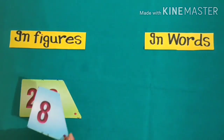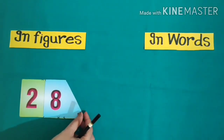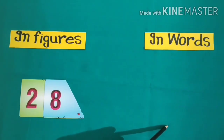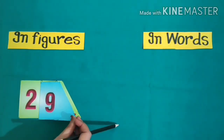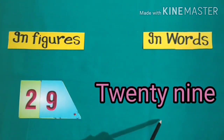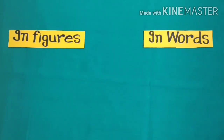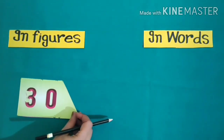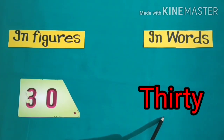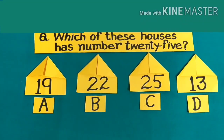Twenty-eight — in words we will write it: twenty-eight. Our next number is twenty-nine, in words we will write it like this: twenty-nine. After twenty-nine, our next number is thirty. We will write it in words like this: thirty.